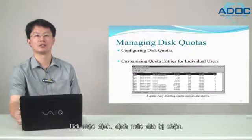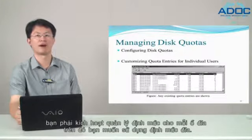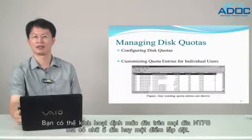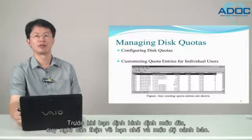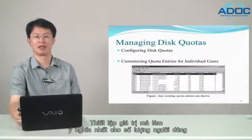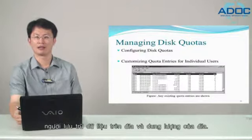By default, disk quotas are disabled. If you want to use disk quotas, you must enable quota management for each volume on which you want to use disk quotas. You can enable disk quotas on any NTFS volume that has a drive letter or a mount point. Before you configure disk quotas, think carefully about the limit and warning levels. Set values that make the most sense given the number of users who store data on the volumes and the size of the volumes.